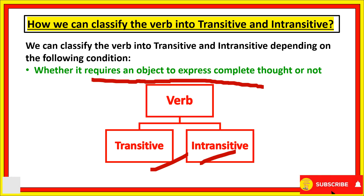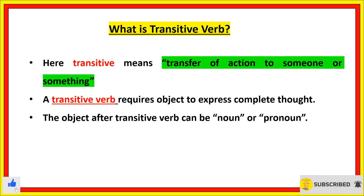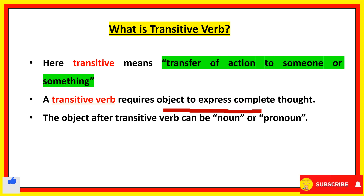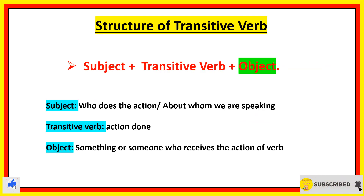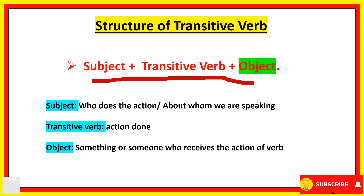So what is a transitive verb? Transitive means transfer of action to someone or something. A transitive verb requires an object to express a complete thought, and this object will be receiving the action of the verb. The object can be a noun or a pronoun. The structure is: subject followed by transitive verb followed by object. The object is very essential in a transitive verb.